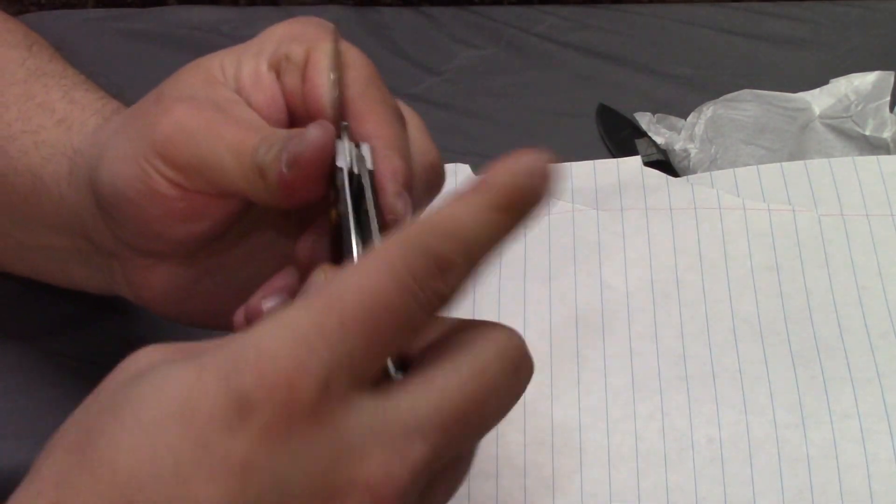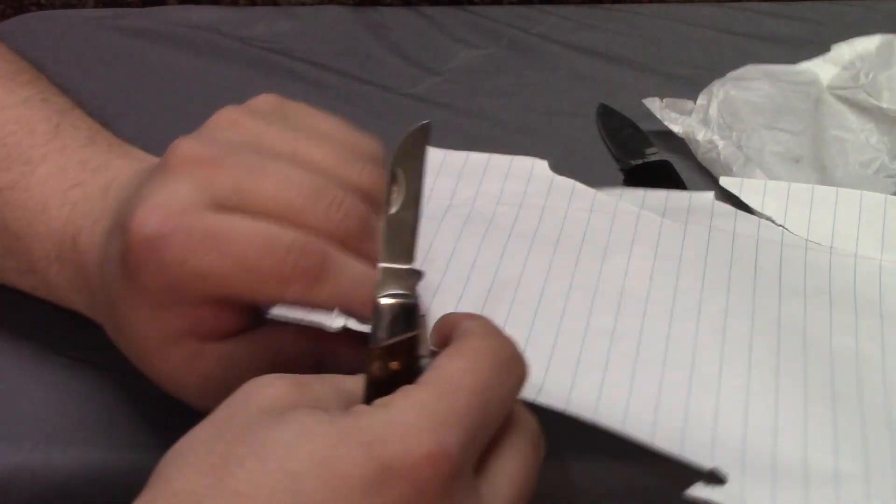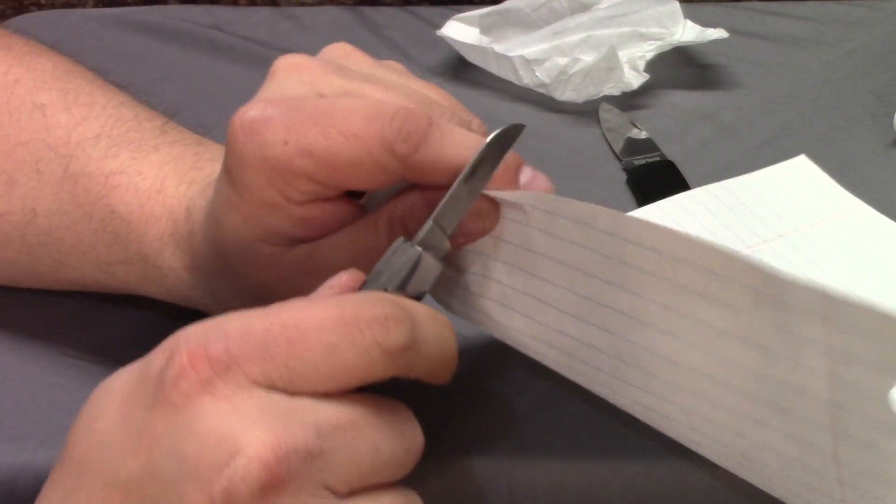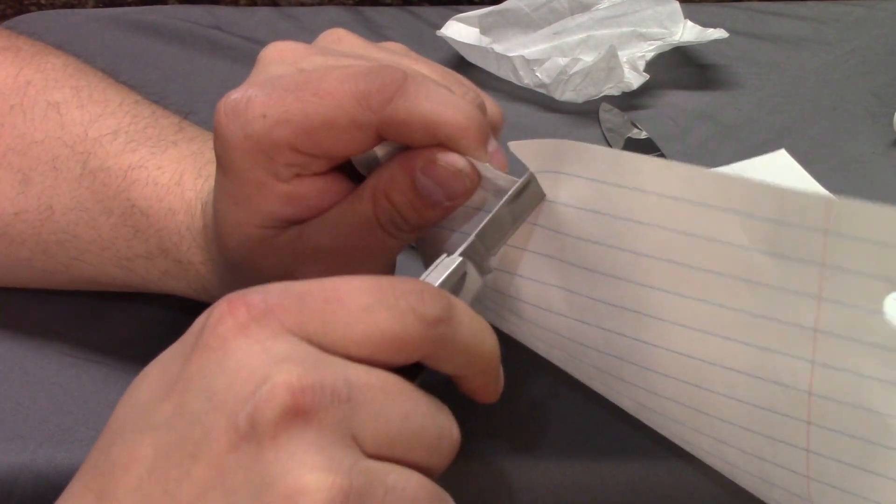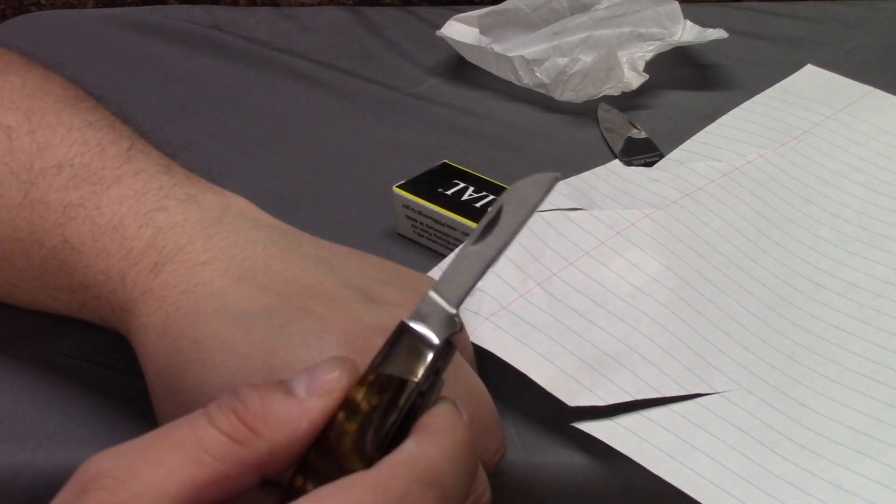Now, to the sheep's foot. That's one thing I like about slip joint knives, is that they make that clipping sound when you close them. Well, it's a good one. That wasn't even a challenge for the sheep's foot. That cut really well.